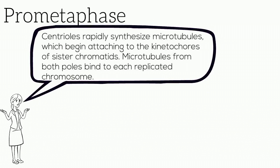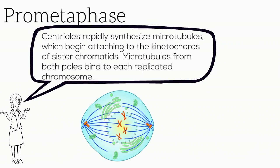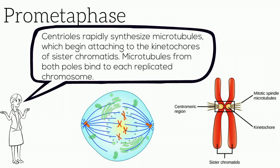During prometaphase, centrioles rapidly synthesize microtubules, which begin attaching to the kinetochores of sister chromatids. It is important to note that microtubules from both poles bind to each replicated chromosome.